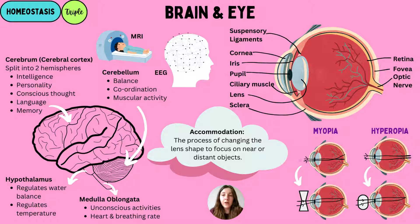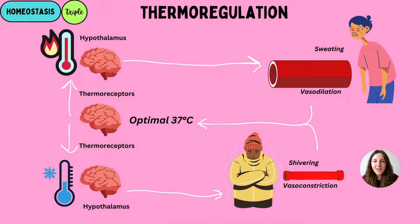The opposite is hyperopia, known as long-sightedness. People with hyperopia need a convex lens so that light refraction occurs at the retina. This is because the eyeball is either too short, or there is some loss of elasticity in the lens — which can be age-related.